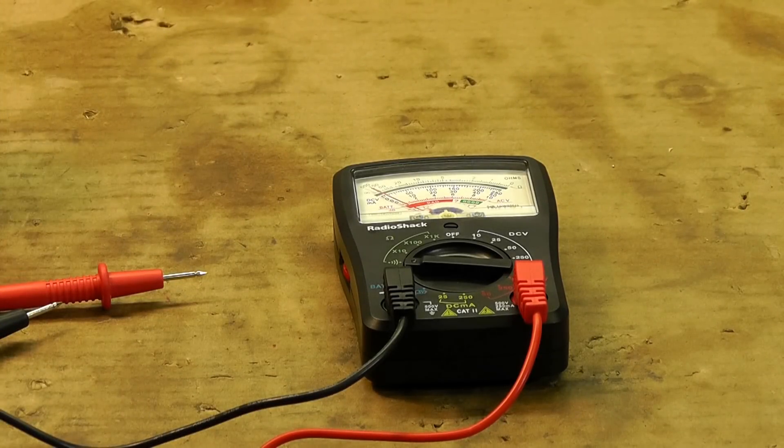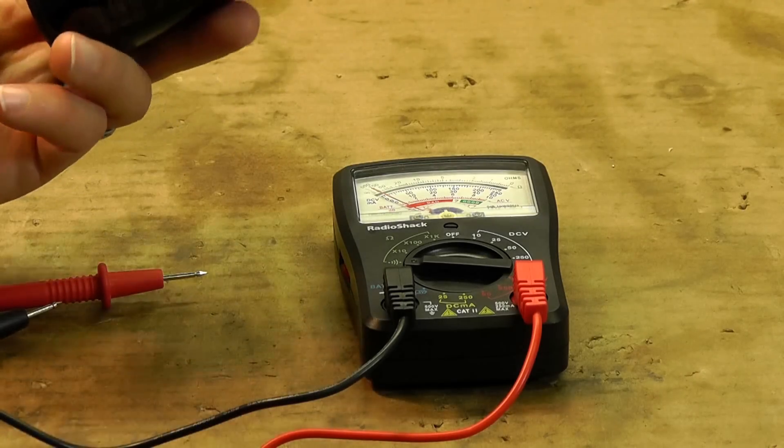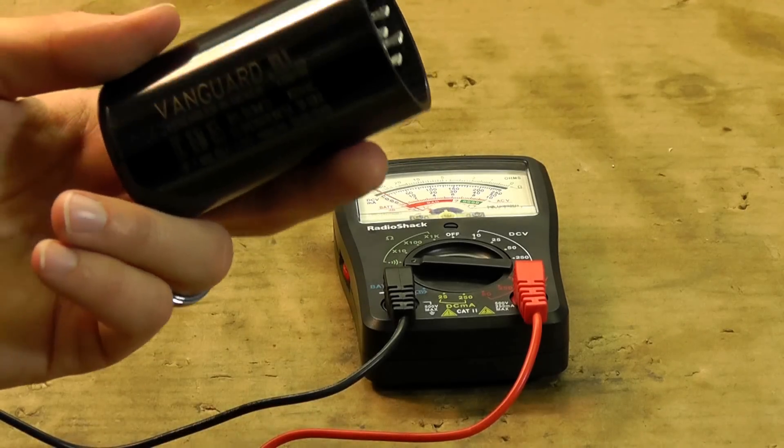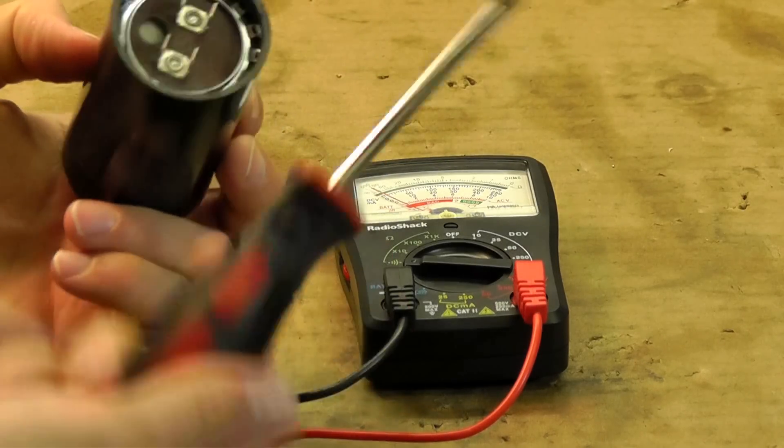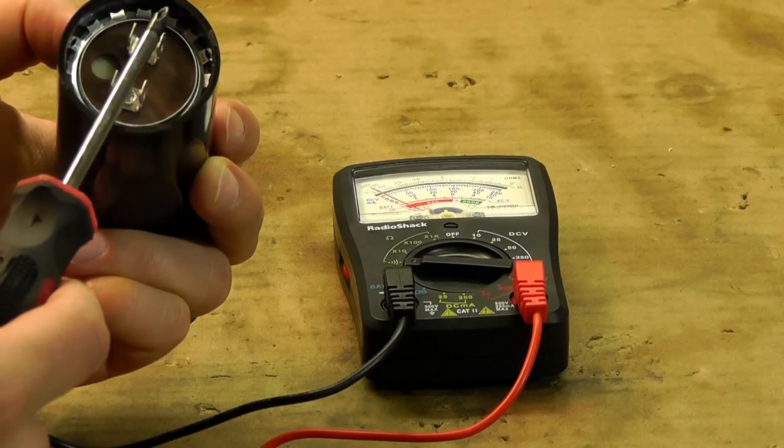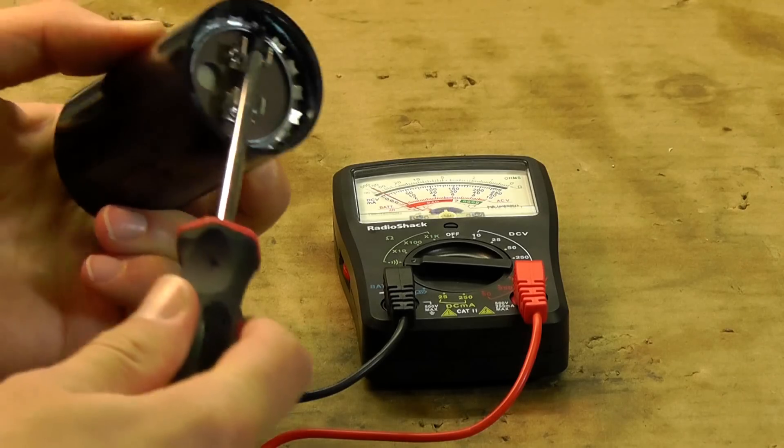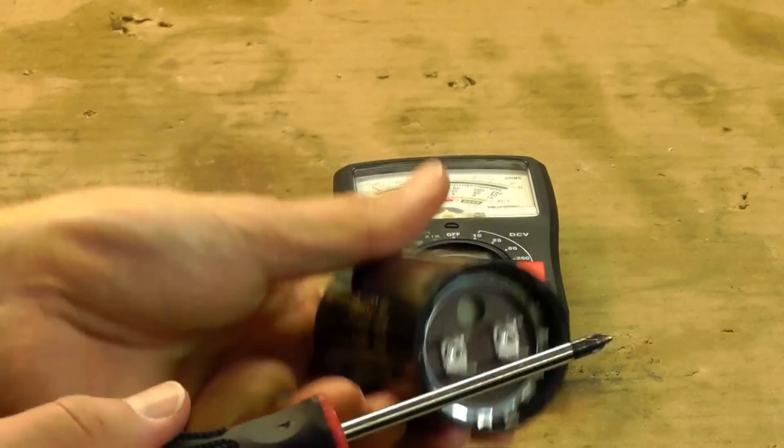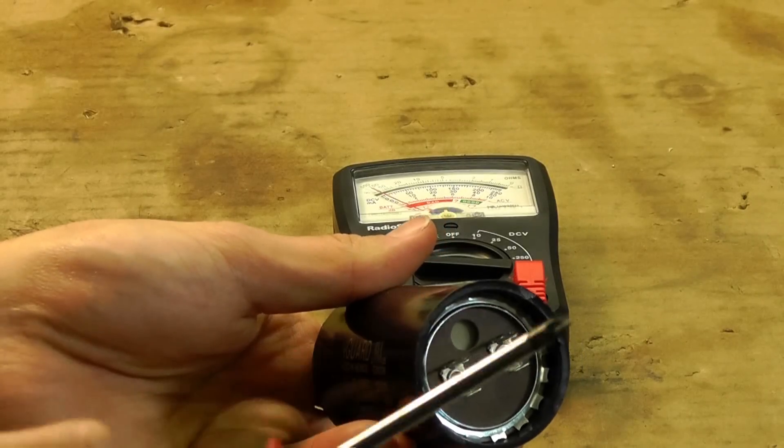So what we're going to do first and foremost, very important, these little guys can hold a big charge and it can knock you on your butt if you don't watch out. We're going to discharge this on the two terminals with an insulated screwdriver. Just touch it across both terminals at the same time, like so, and that will discharge it.